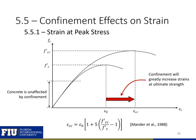Next, we're going to take a quantitative look at how confinement affects our strain. First, we'll look at how confinement affects the strain at ultimate strength. In our unconfined concrete, epsilon-naught is the strain at our ultimate strength F'c. In our confined concrete, epsilon-cc is the strain at our ultimate confined strength F'cc. We'll use the Mander et al. expression to relate our strain at peak stress of the unconfined concrete to the strain at peak stress for the confined concrete. There will also be a range initially where our stress-strain curves are very similar to each other, as the concrete is unaffected by confinement.